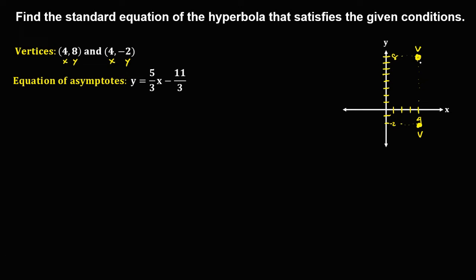Observe that the position of these vertices is in vertical alignment. Therefore, this hyperbola is a vertical hyperbola. The formula for the standard equation of a vertical hyperbola is: (y - k)² / a² minus (x - h)² / b² equals 1.